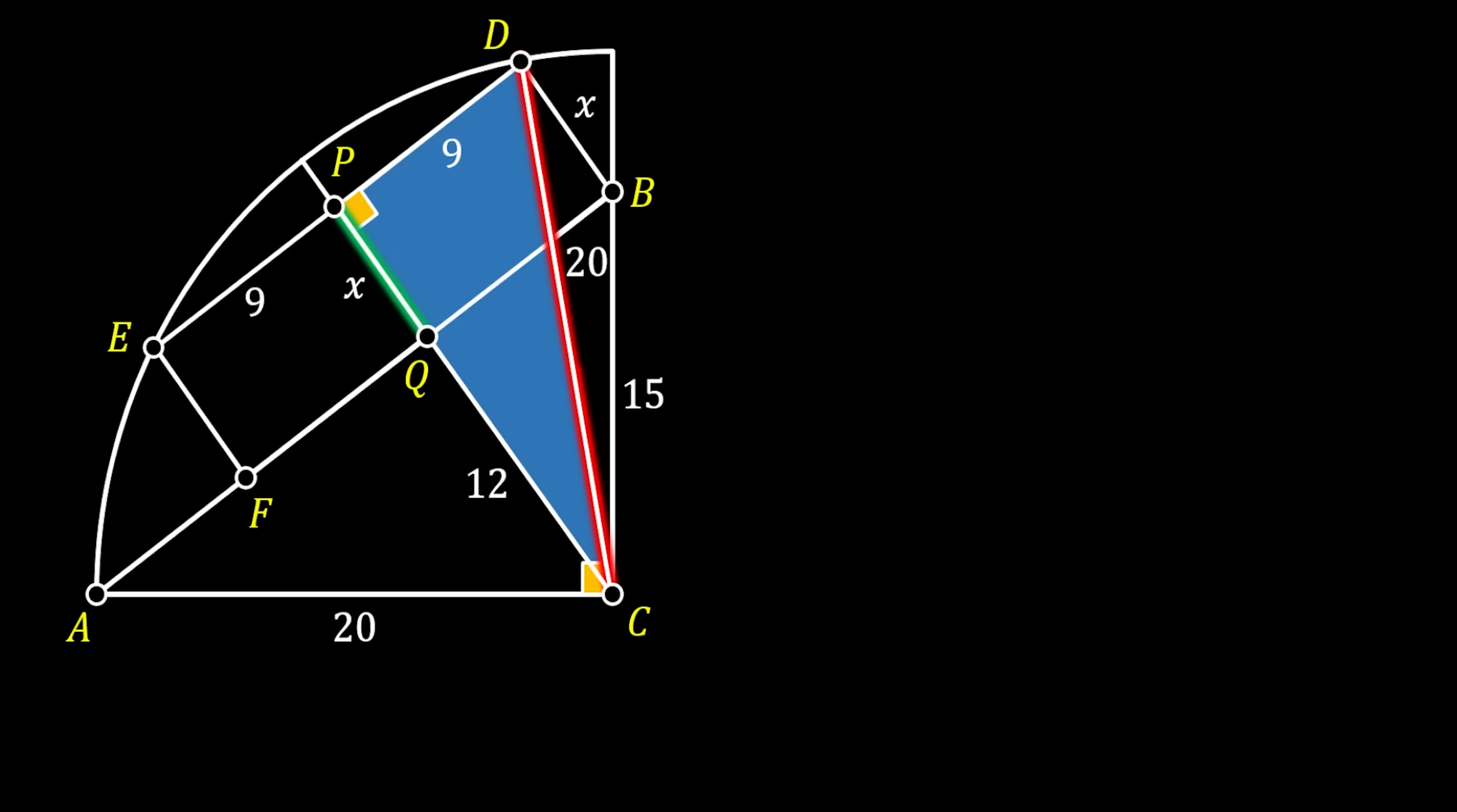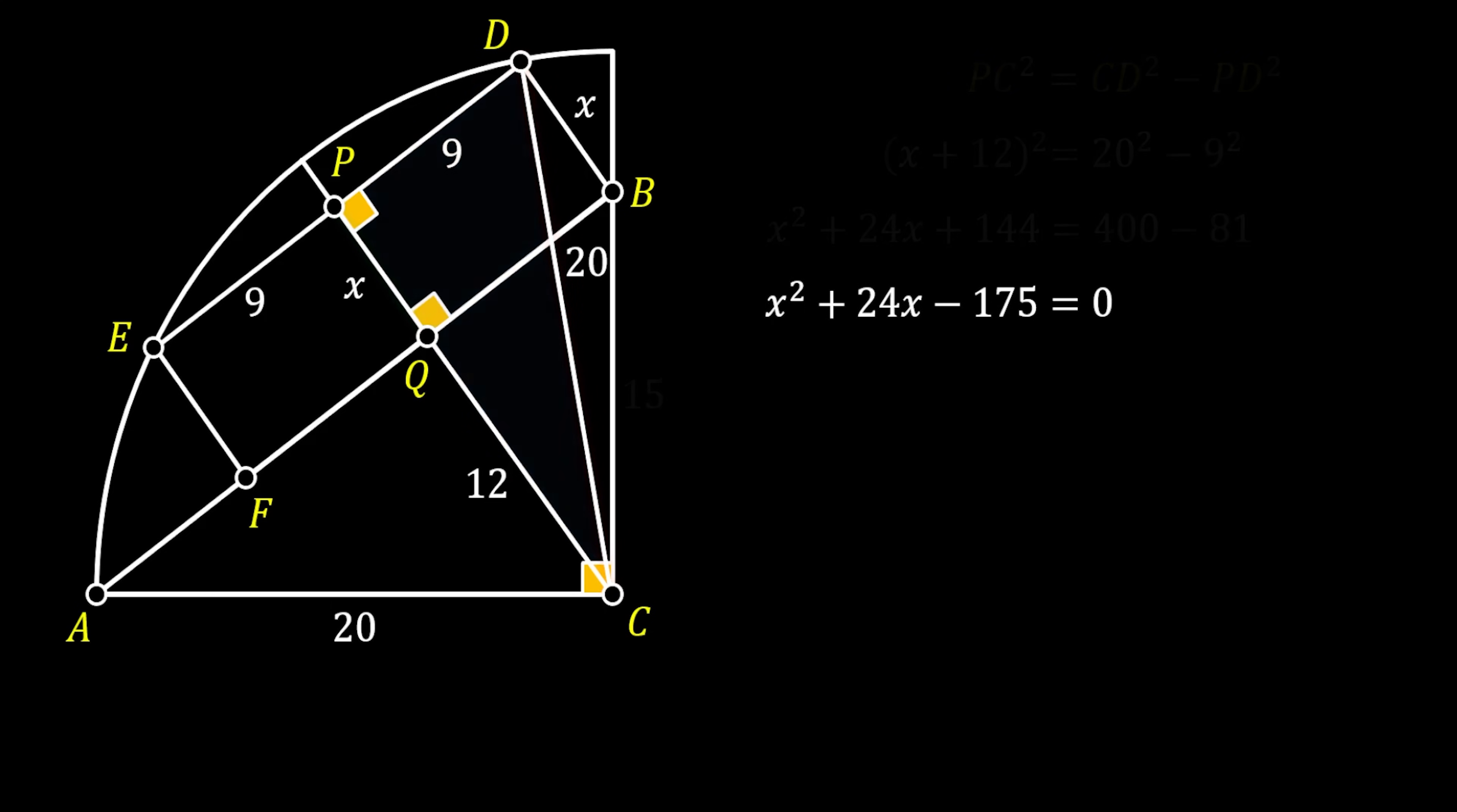We can, of course, use the Pythagorean theorem and say that the leg PC squared is equal to the hypotenuse CD squared minus the leg PD squared. Now, we will substitute our values from the sketch. Then, we will expand the left side by using the square of binomial and we can simplify to get this really nice quadratic equation of x² + 24x - 175 = 0.